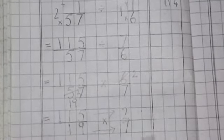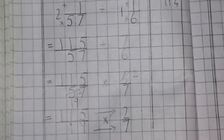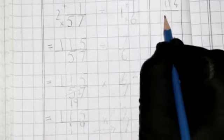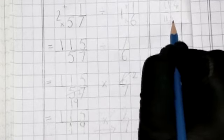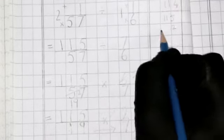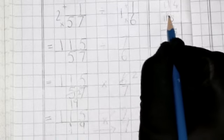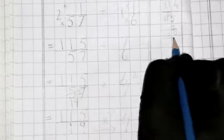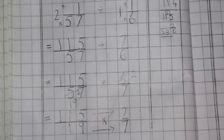115 multiplied by 2. 2 fives is 10, write 0 and 1 is carried. 2 ones are 2, plus 1 is 3. 2 ones are 2. This is 230 numerator.